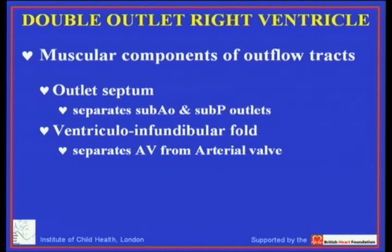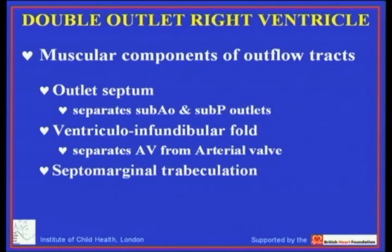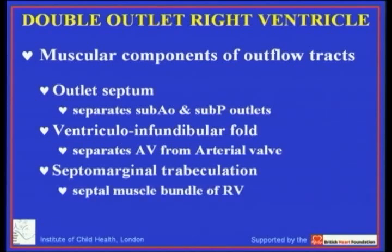The second structure to consider is the ventricular infundibular fold — any structure which separates the leaflet of an atrioventricular valve from the leaflet of an arterial valve. Of necessity, this is the muscular inner heart curvature. If the ventricular infundibular fold is effaced, that is the situation in which we attain fibrous continuity between the atrioventricular and arterial valve leaflets.